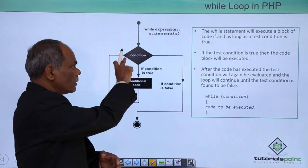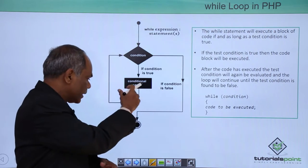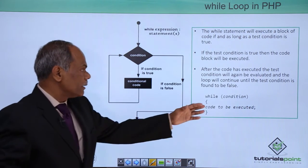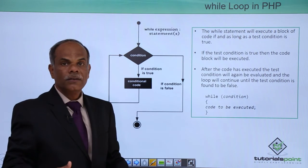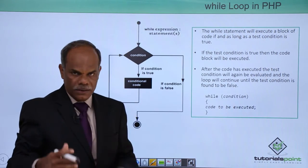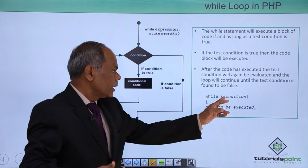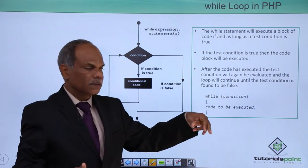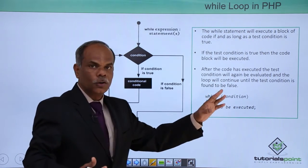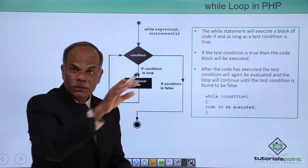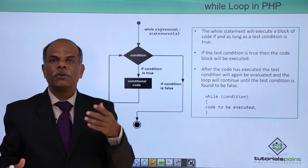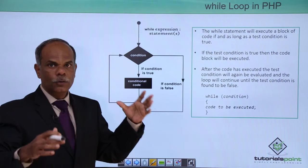After the execution of the block of statements, the rest of the flow of the program will keep on continuing. For example, in this schematic expression of the while statement: while, inside the bracket there is a condition — a logical expression — as long as this condition is true, this code is to be executed. As soon as this condition is no longer true, the loop execution will stop and the subsequent statements will keep on executing. That is how the while loop is executed.